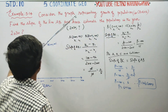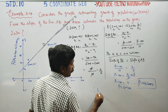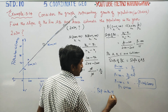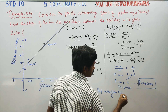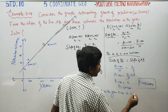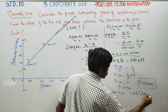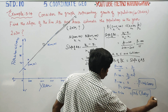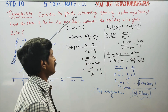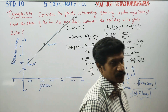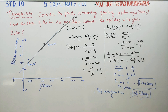Therefore, the estimated population in the year 2030 is equal to 106 crores. The key idea is collinearity — since the three points are collinear, slope of AB equals slope of BC. Using this idea, the problem is solved. Thank you.